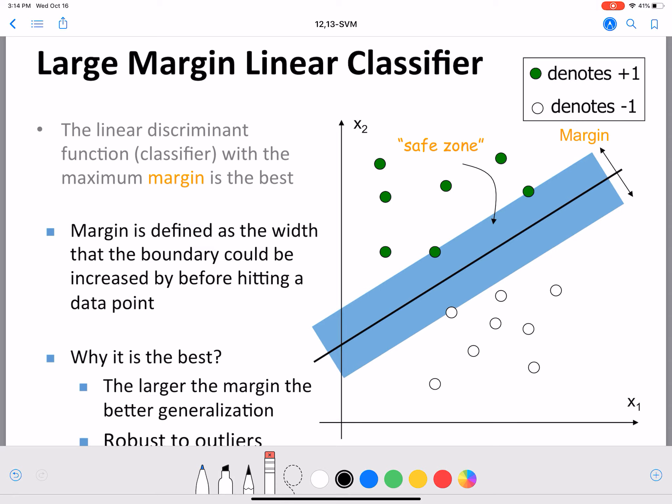To define this margin, we are going to start at the line here, which is our classifier. We are going to start here and increase the boundary, keep increasing the boundary till we hit a data point on either side. So here the boundary hits these two points.